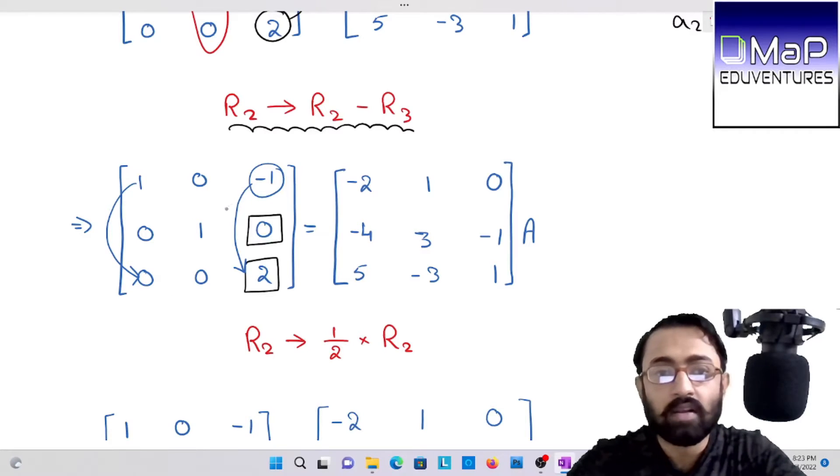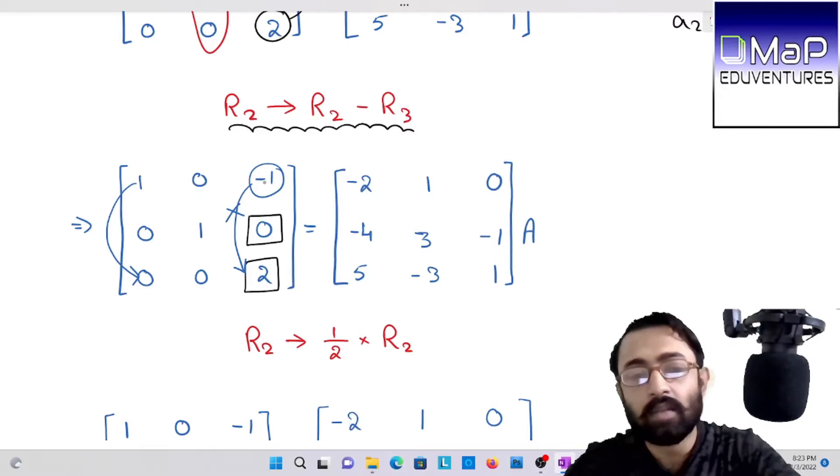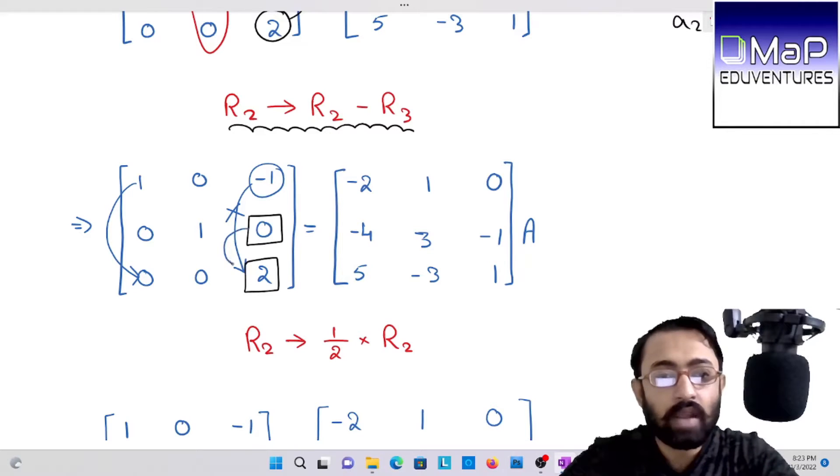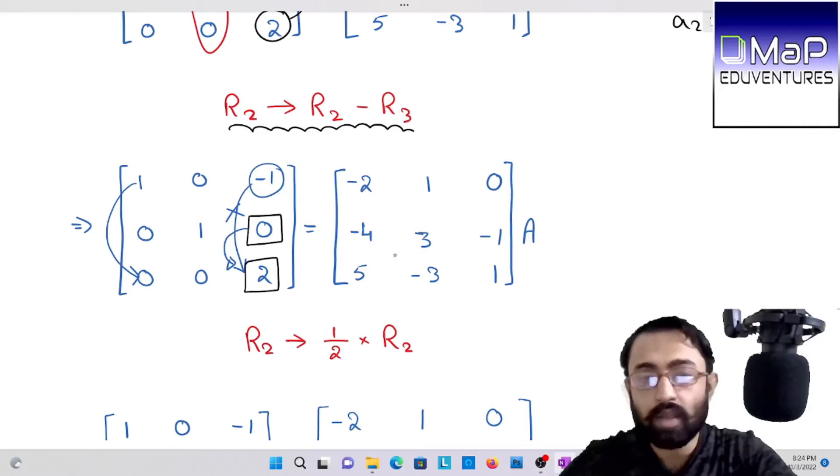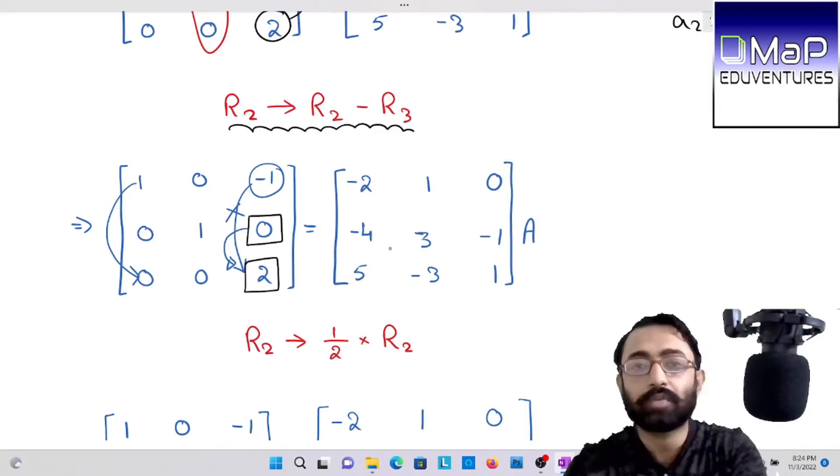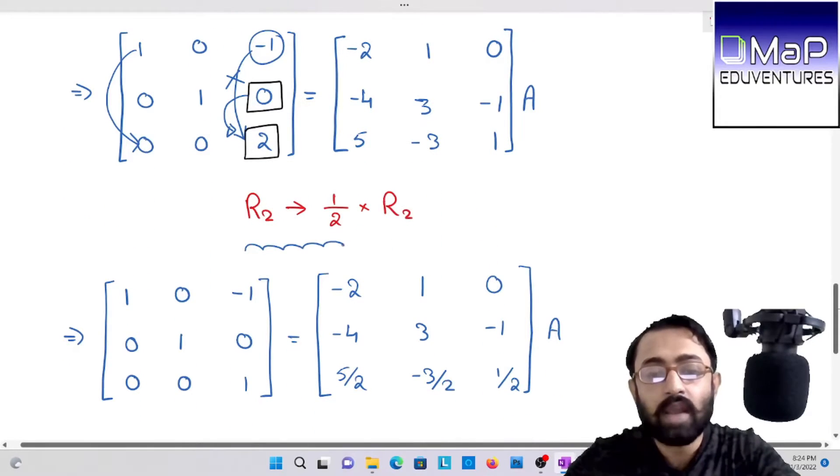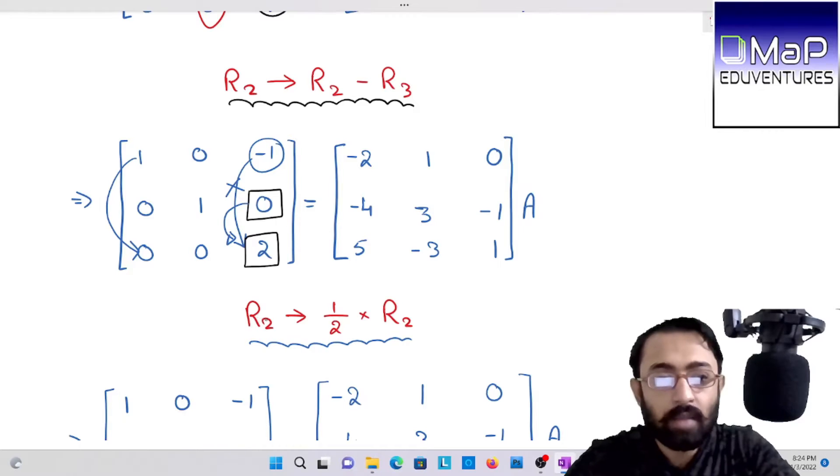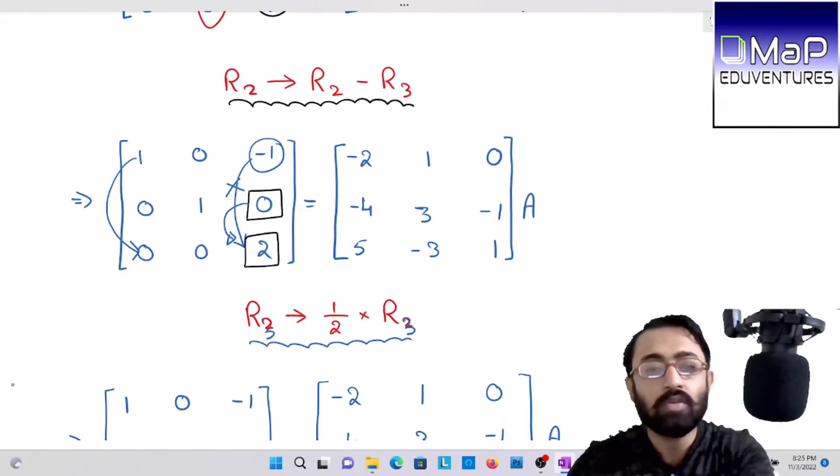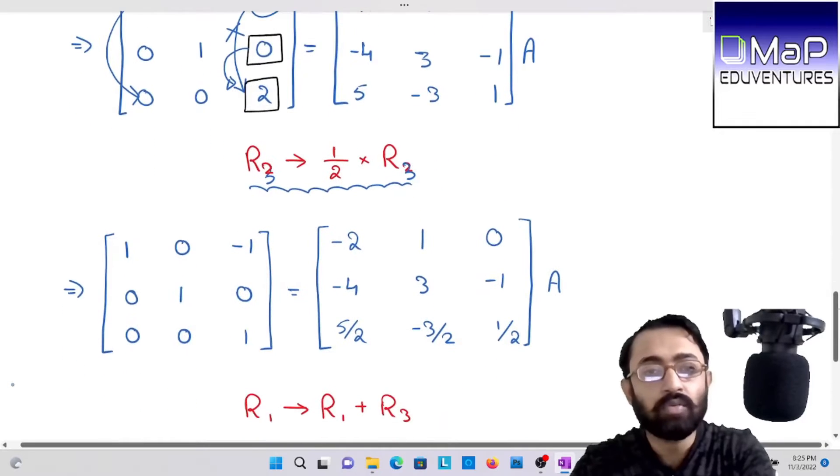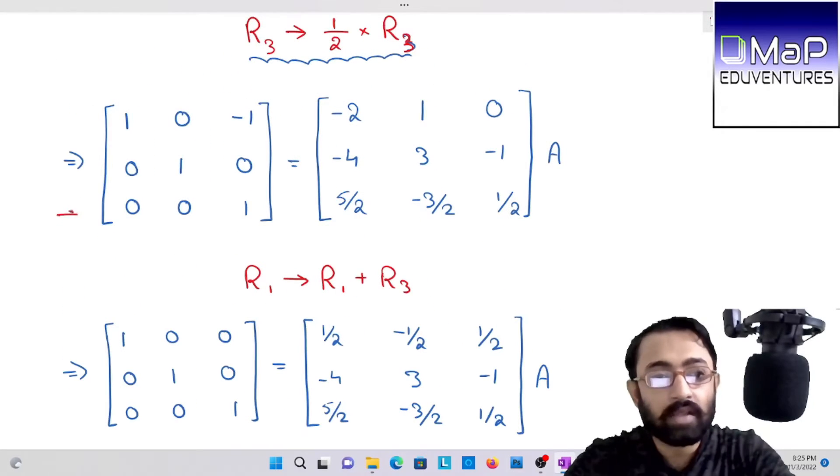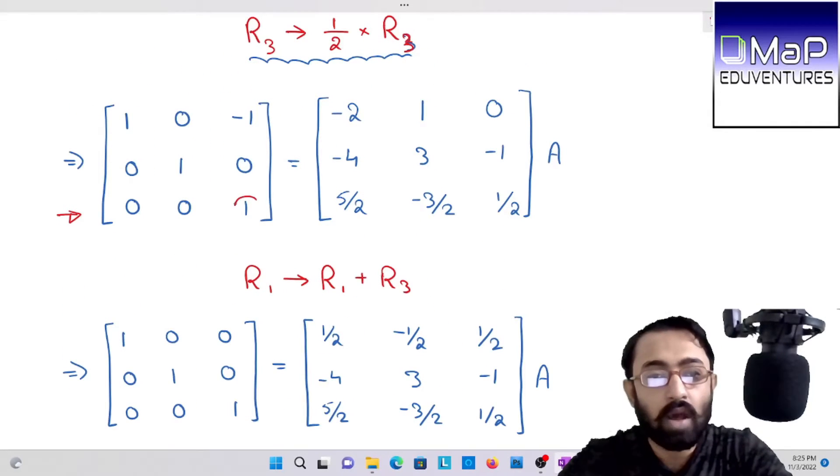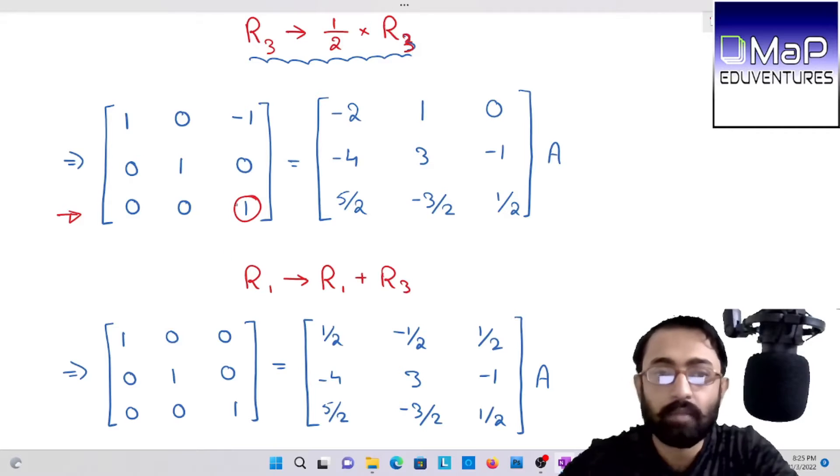If we take the help of that, then obviously this will come and change the zero. So we cannot take the help of A13. Neither you can take the help of A23. So we have to divide. We have no option. So I have multiplied R3 with a half. R3 is 0, 0, 1. A33 is now one.